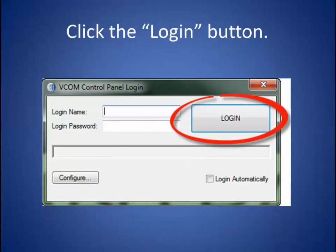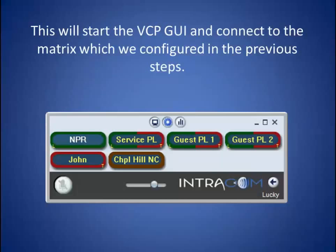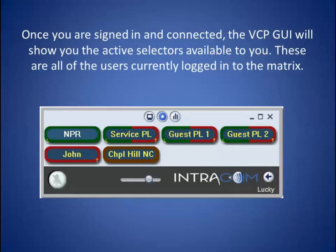Click the login button. This will start the VCP GUI and connect to the matrix which we configured in the previous steps. Once you are signed in and connected, the VCP GUI will show you the active selectors available to you. These are all of the users currently logged into the matrix.